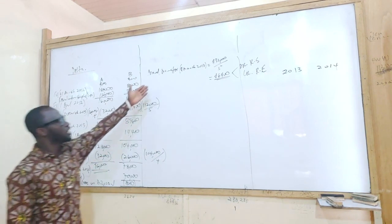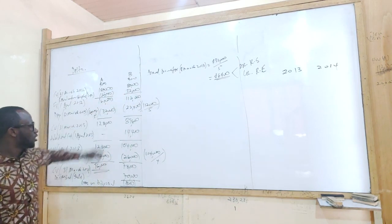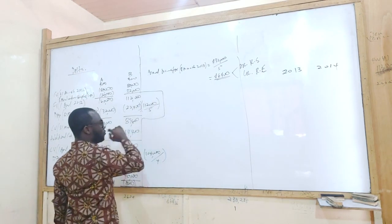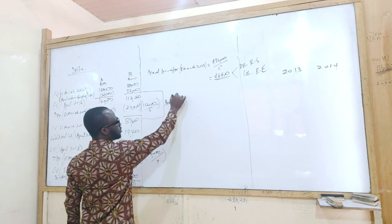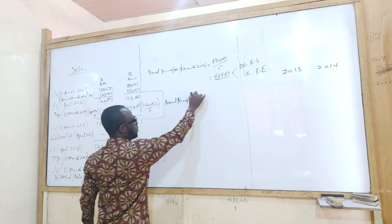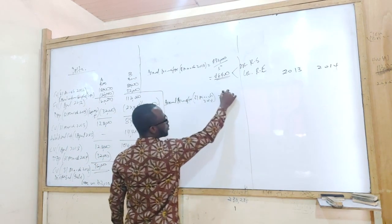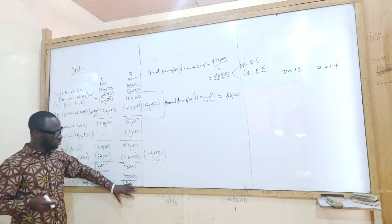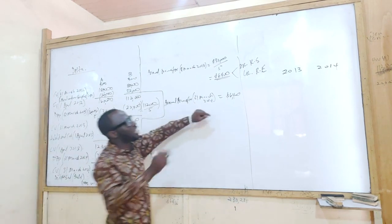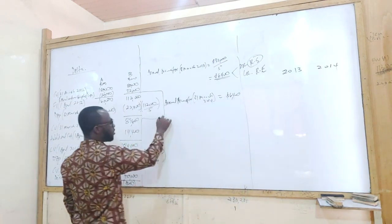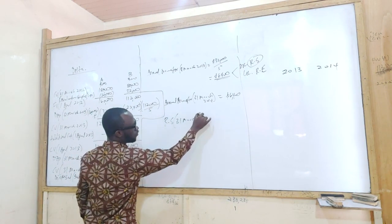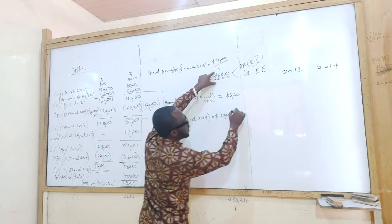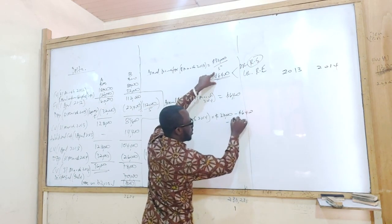Now let's look at the transfer. We did the first transfer for 31st March 2013. We will do another transfer again for 31st March 2014, and it will be the same amount of 6,400. But now that the asset is sold on that date, the amount left in the revaluation surplus going forward — we started with 32,000, and we've taken 6,400 two times, leaving 19,200.